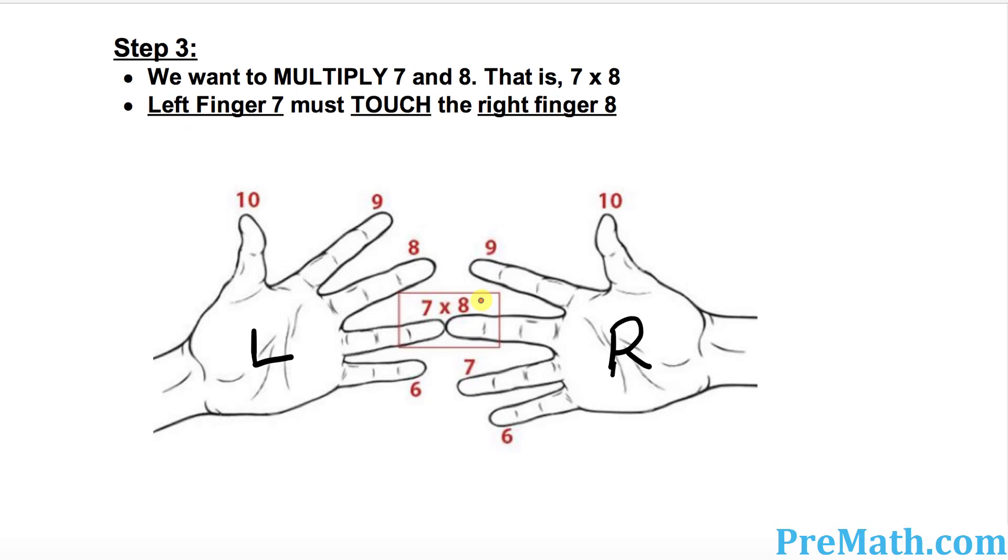In step 3 we want to multiply 7 and 8. We just picked one example: 7 times 8. So that means look at finger number 7 from the left hand, right up here where I put across, and finger number 8 on the right hand side. We're gonna connect them.